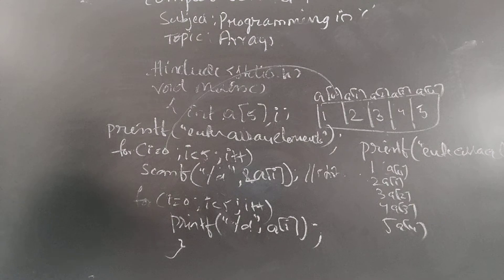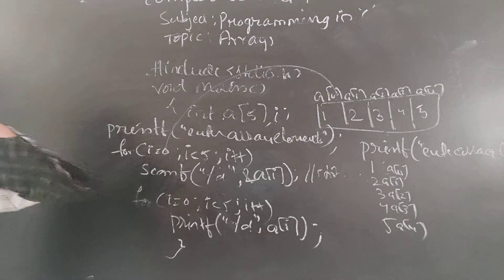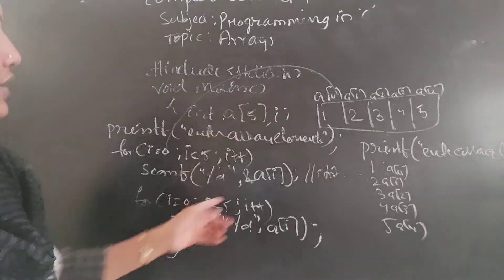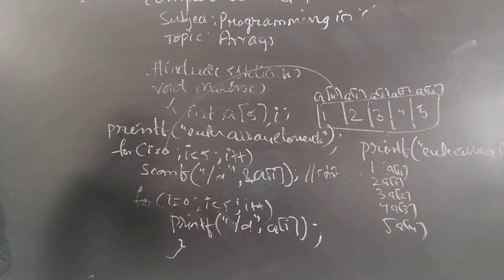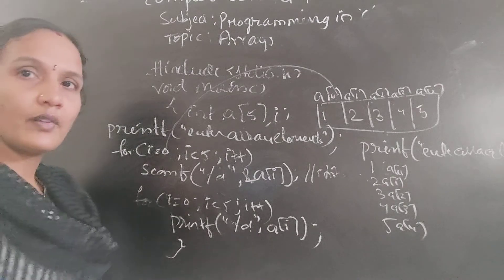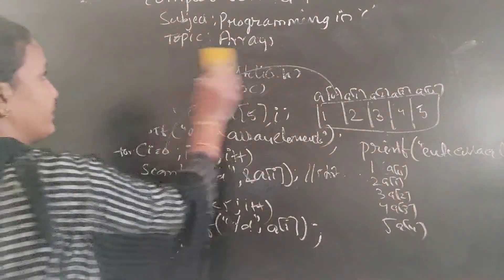Now I will explain the same example for a two-dimensional array also. If it is a one-dimensional array, we are using only one for loop. If it is a two-dimensional array, we will use two for loops.